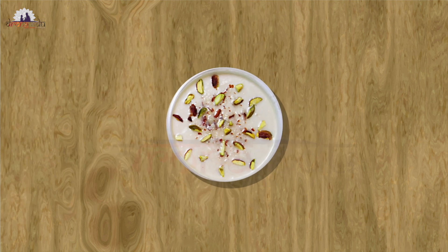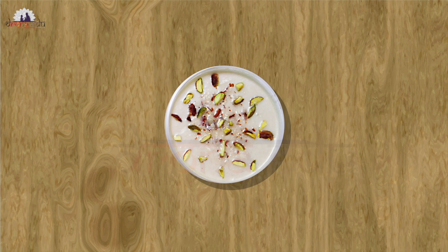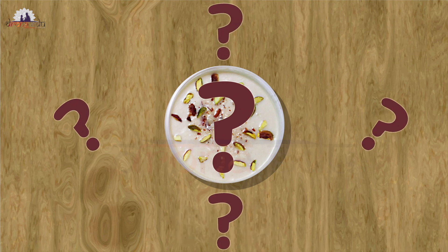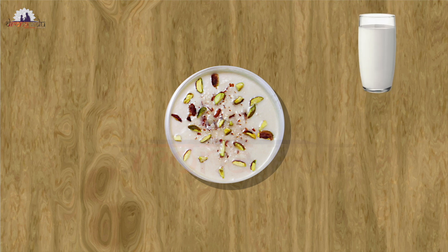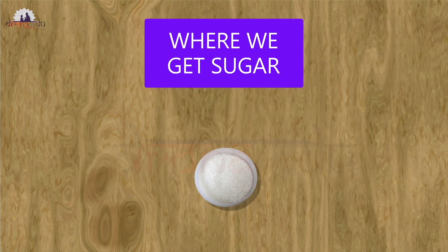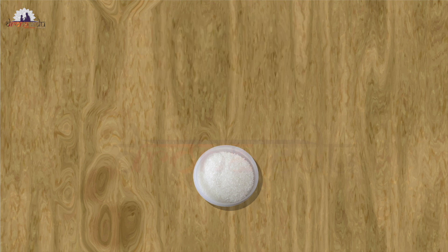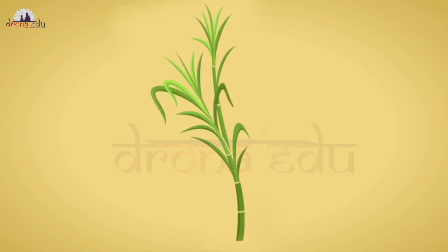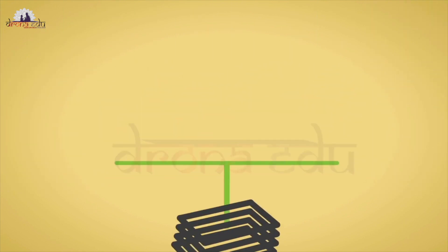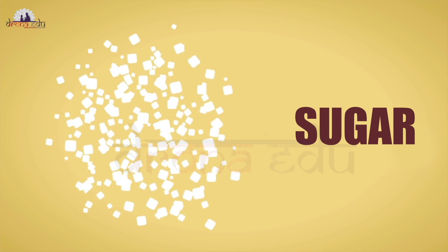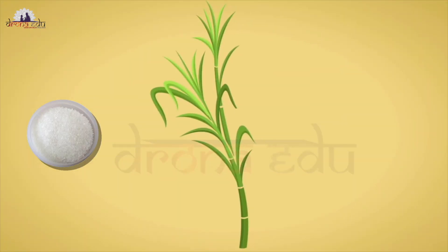Now let's make some kheer, which is a delicious dish. The food is kheer. The ingredients are milk, rice, and sugar. Sugar comes from a plant — the sugarcane. They cut the sugarcane, grind it, take the juice, boil it, and make small white crystals, which is sugar. So we get sugar from a plant.